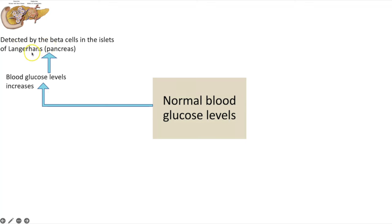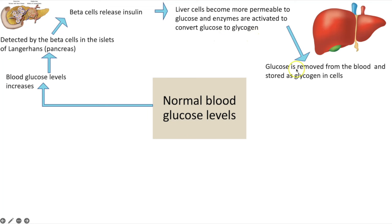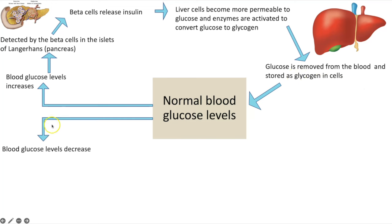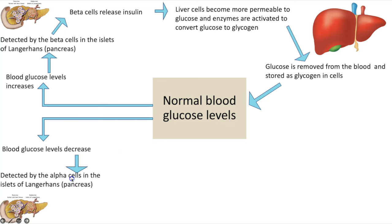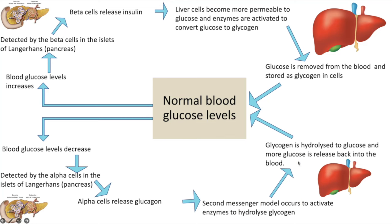Following a carbohydrate-rich meal, normal blood glucose levels increase. That increase is detected by beta cells in the islets of Langerhans. The beta cells release insulin, which causes liver cells to become more permeable to glucose so glucose can move from the blood into the liver cells. Insulin also activates enzymes to convert glucose to insoluble glycogen stores — so glucose is removed from the blood, stored as glycogen, and blood glucose returns to normal limits. Conversely, a decrease in blood glucose is detected by alpha cells, which release glucagon, resulting in glycogen being hydrolyzed back into glucose through the second messenger model.